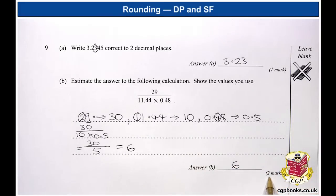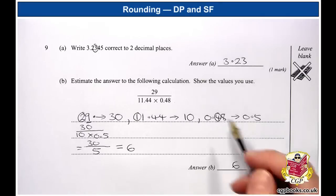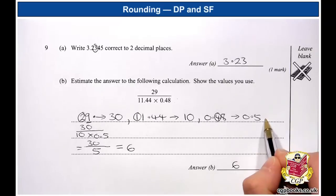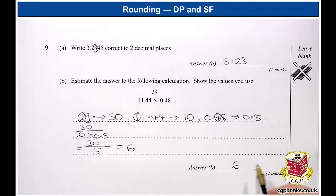OK, so let's have a quick look at the marks. There are 2 available. You'd get the first mark for rounding at least 2 of these numbers correctly. So that's this line here. And you'd get the second mark for doing the calculation and getting the right answer.